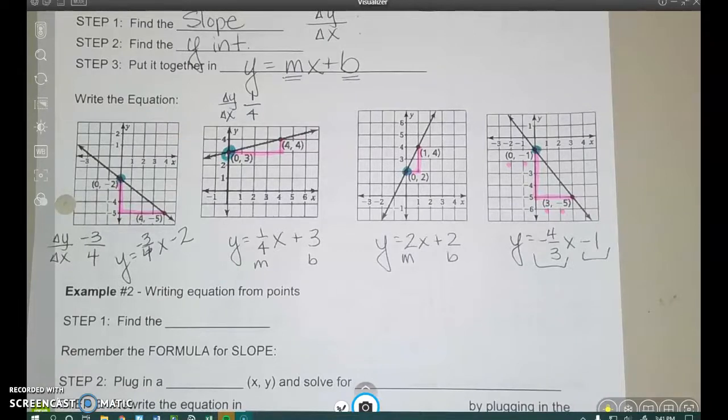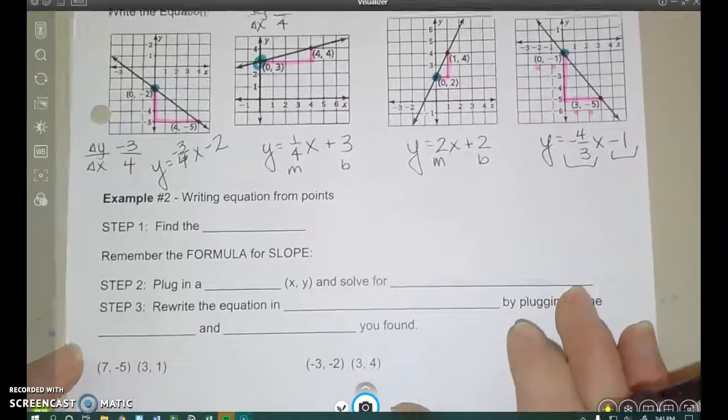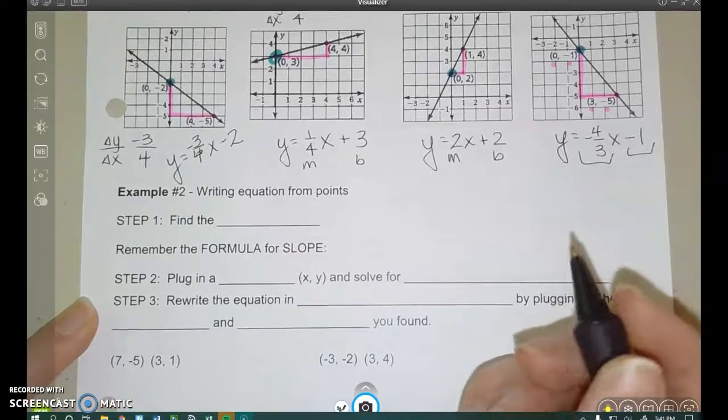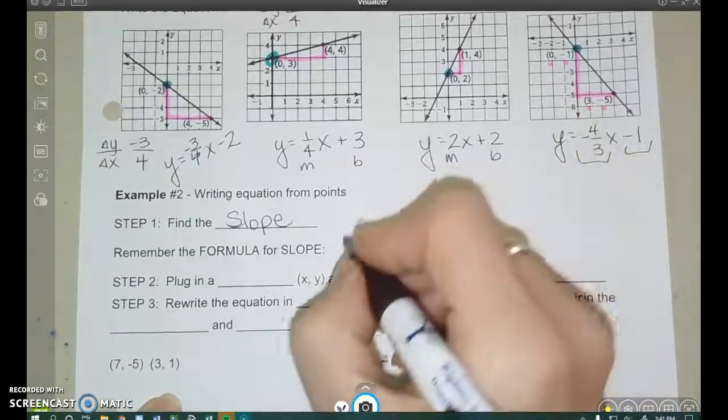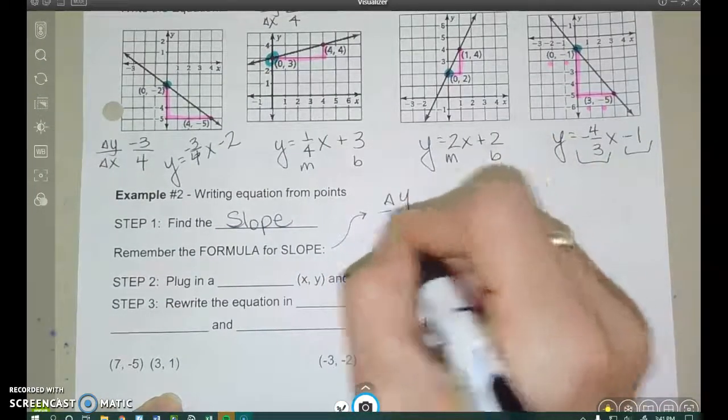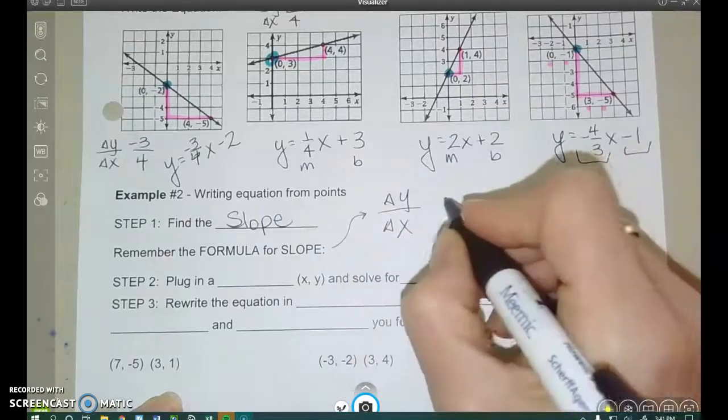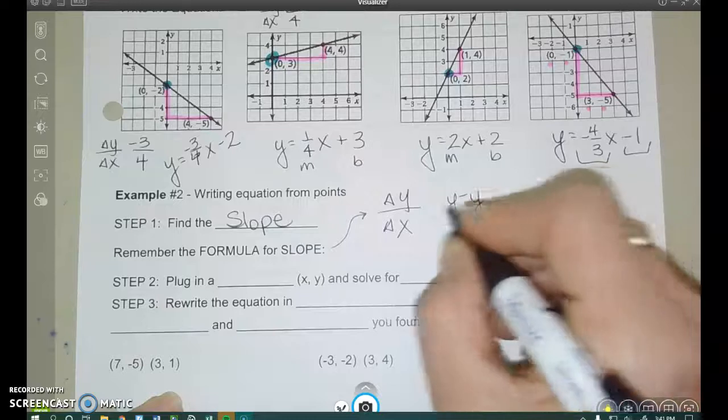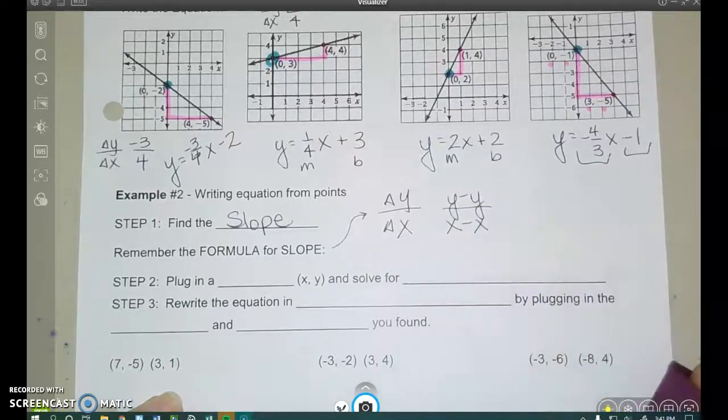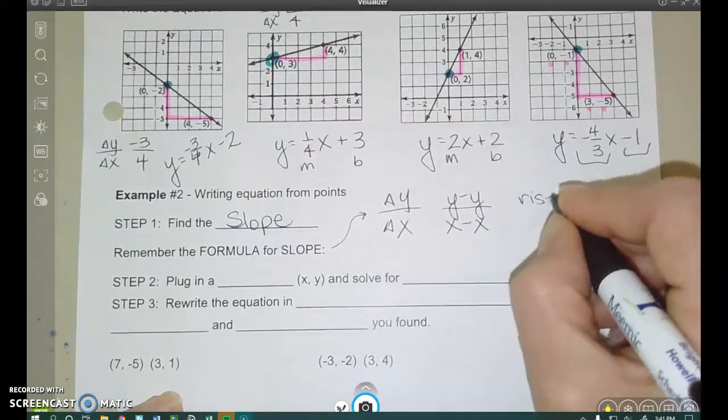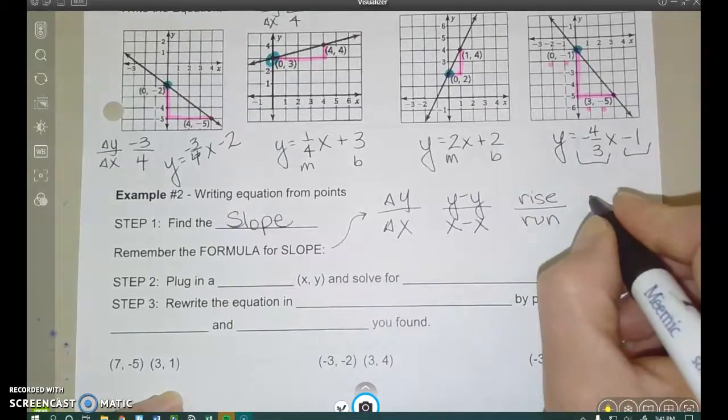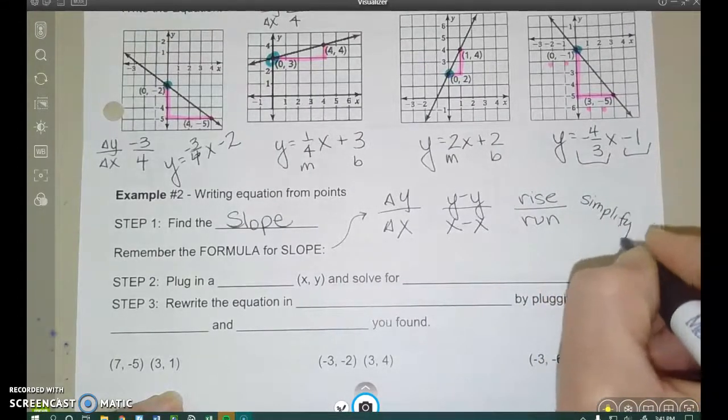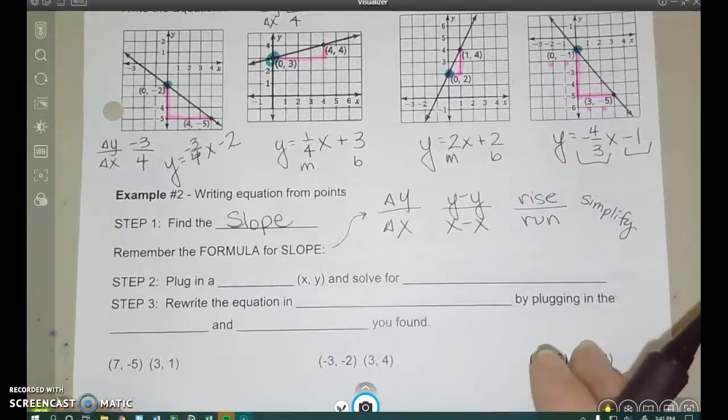All right, so let's move on to example 2, writing equations from points. So now I have no graph to look at. I'm just using the points to get the whole equation here. All right, so find the slope. Remember our slope formula. Change in y over change in x. But we can also say that change in y is really subtracting the y values and subtracting the x values. Or rise, how much does it go up or down? Run, how much does it move over. And I'm going to put a little note here. Simplify, make sure your fractions for your slope are simplified.